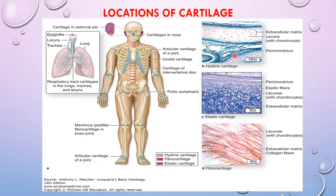The fibrocartilage, shown in red, is present in all intervertebral discs, the pubic symphysis, and the menisci of the knee joint. The elastic cartilage, shown in magenta, is found in the external auditory meatus, the pinna of the ear, and the epiglottis of the laryngeal cartilages.